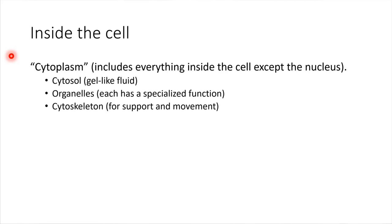Moving inside of the cell, we have a substance called cytoplasm. Basically, the cytoplasm includes everything inside of the cell except for the nucleus. There are really three key things that the cytoplasm includes: the fluid called cytosol, which is the gel-like substance, and organelles, which are floating in the cytosol.